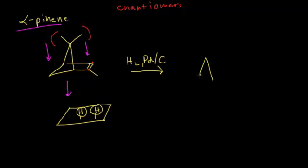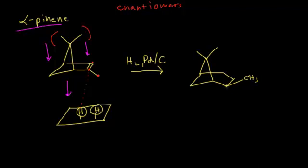The spaceship analogy always helps students understand why there's only one product for this reaction. We have our two methyl groups, and the hydrogens are going to add from below. This hydrogen adds right here, pushing the methyl group up. The other hydrogen adds to the opposite carbon, and we can show the syn addition of these two hydrogens. There was another hydrogen on that carbon too, so it also gets pushed up. That is your only product — the hydrogenation reaction is very sensitive to steric conditions.